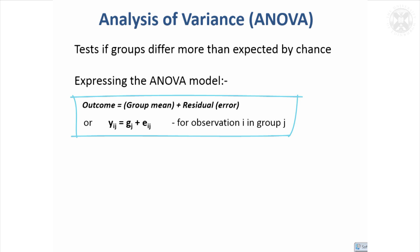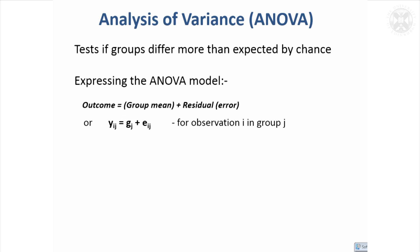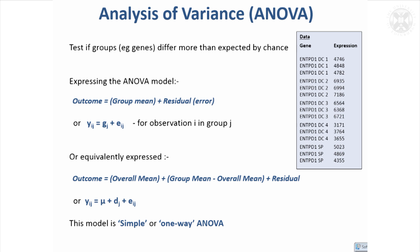Another way to express the outcome is: a value Y on the ith observation in the jth group, where G_J is the group mean for group J, and then you have an error term for that ith observation in group J. To help imagine this, consider a dataset measuring expression of various different genes. The gene would be the group, G_J would be the mean of each group's values, and there's an error added on to that.